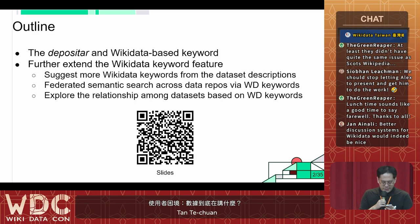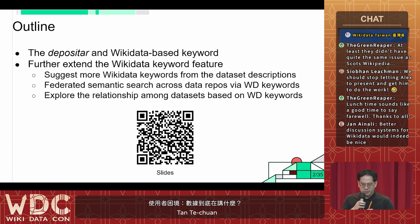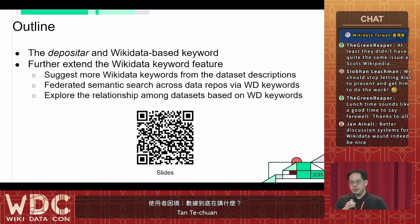這個 talk 主要分成四個部分。首先簡單介紹一下 Deposita 研究資料寄存所的 Wikidata 關鍵字功能。接下來討論可能的延伸應用：第一點是從資料集的相關描述來建議更多的關鍵字；第二個是透過 Wikidata 關鍵字 QItem 之間的語意關聯，達成與其他儲存庫之間的聯合搜尋；第三個是 Wikidata 關鍵字之間彼此的語意，有可能達到不同資料集之間的關聯。